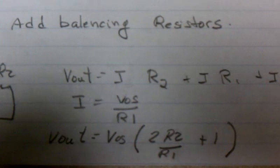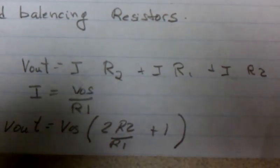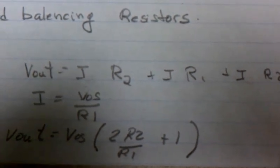And the derivation here is that we sum up the currents, I times R2 plus I times R1 plus I times R2.